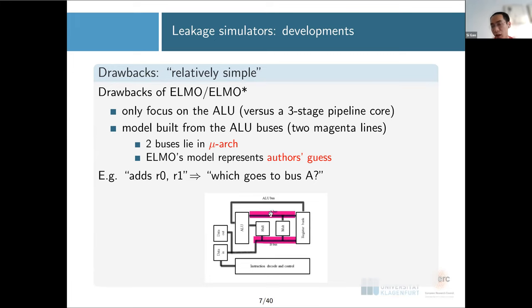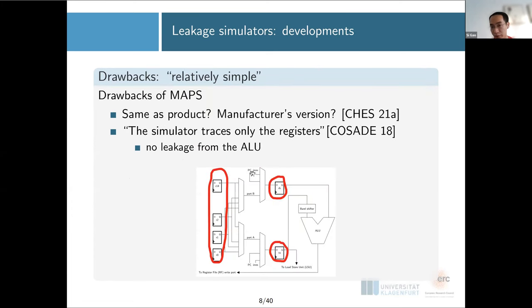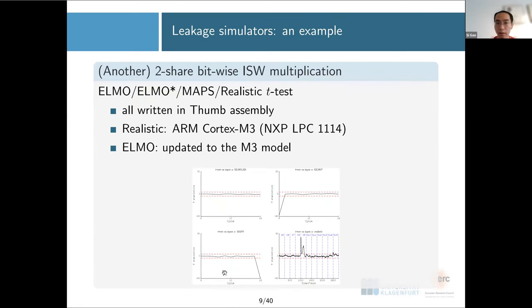So ELMO's model actually represents the author's guess. For MAPS, the situation is different. MAPS gets the RTL source code from ARM, but the question will be whether this is the same as the products on the market, or whether the manufacturer gets this from ARM and whether they will do their own revision or not. The other issue is the MAPS paper already stated they only take care of the register transition leakage, basically all the red circles here. So if your leakage is actually coming from the ALU or all the multiplexers here, they are not necessarily covered.